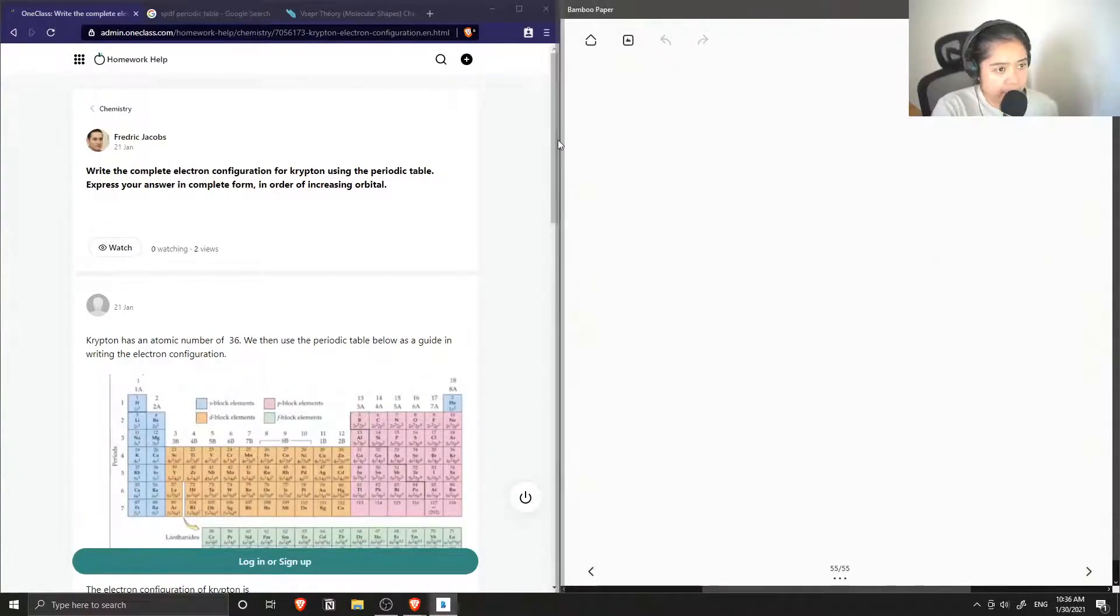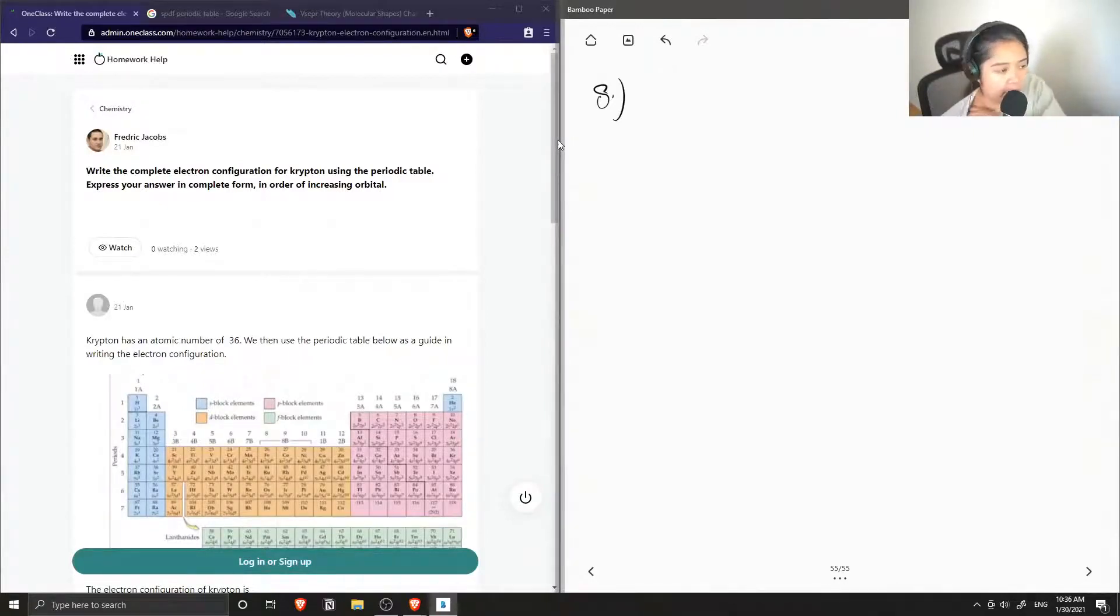Okay, so question number eight is to write the complete electron configuration of krypton using the periodic table. Express your answer in complete form in order of increasing orbital.